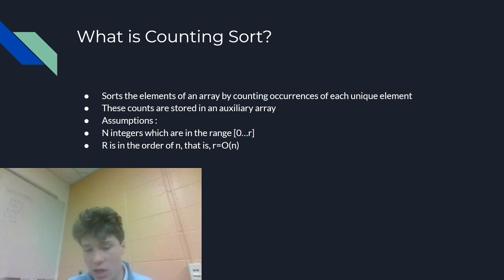When we're doing this algorithm, we're assuming that there are n integers in the range 0 through R. We'll call it R in this case. It is commonly called K, or it can be called anything.